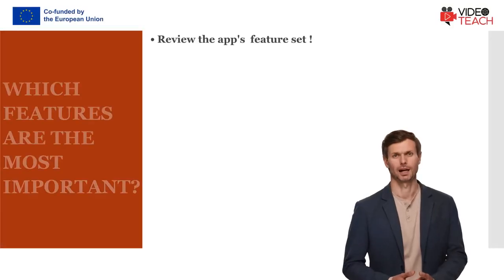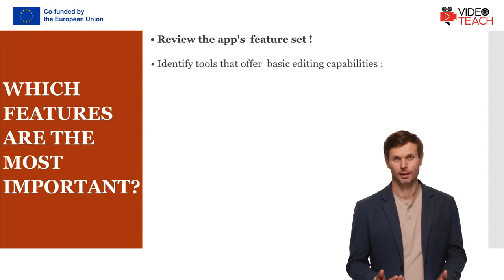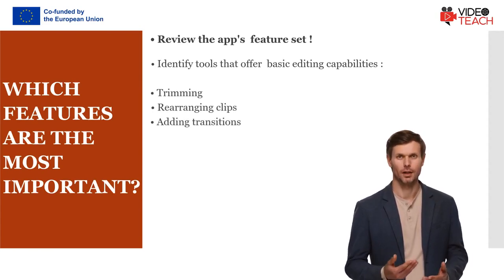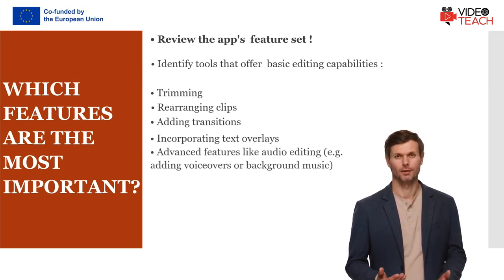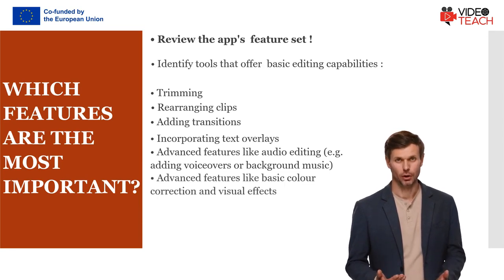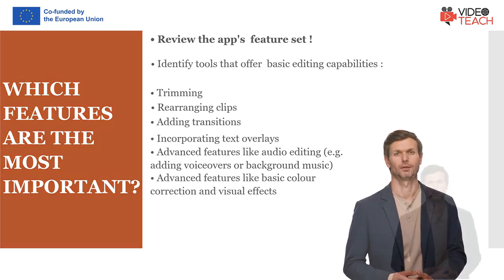Then, review the app's feature set. Identify tools that offer basic editing capabilities such as trimming, rearranging clips, adding transitions, and incorporating text overlays. Features like audio editing — for example adding voiceovers or background music — can also be fundamental to the quality of your video. You can also look for features like the ability to apply basic color correction and visual effects to further enhance your videos.